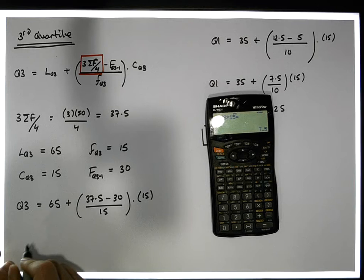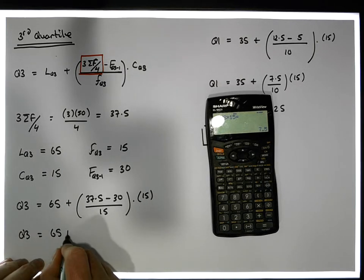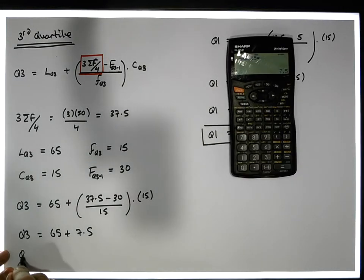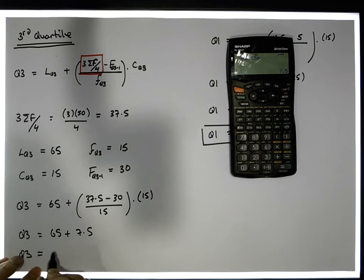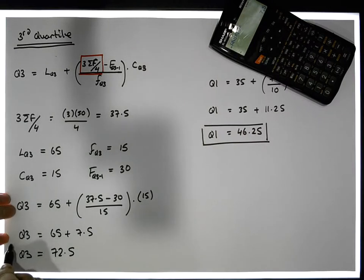And multiply it by 15 gives us a value of 7.5. So actually Q3 is equal to 65 plus 7.5, which gives us a value of Q3. Q3 must be equal to, well, 65 plus 7 is going to give us 72, so it's 72.5, and this is our next important value that we require.